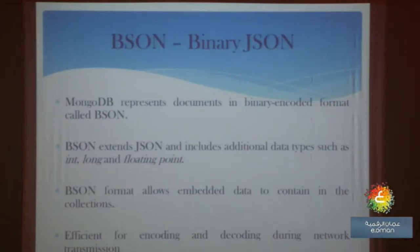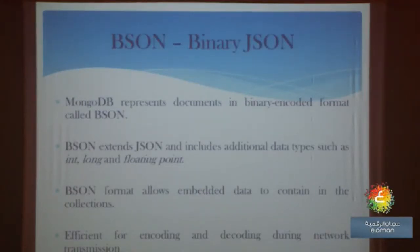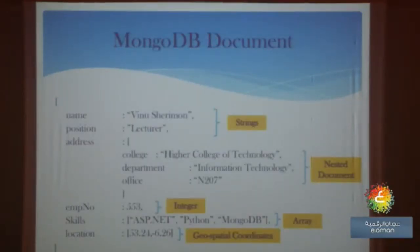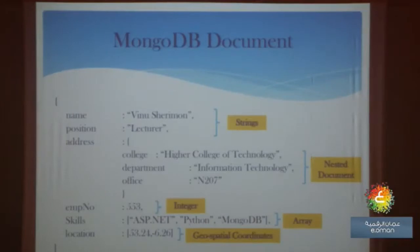Data in MongoDB is represented in BSON, which is the binary representation of JSON format. BSON supports more data types than JSON, and it is efficient for encoding and decoding during network transmission. A MongoDB document can contain different types of data inside a single document — strings, nested documents, integers, arrays, and geospatial coordinates.